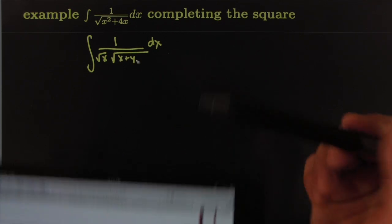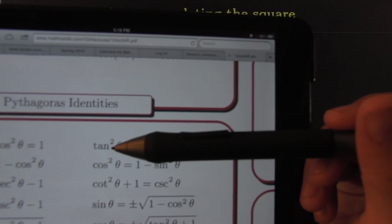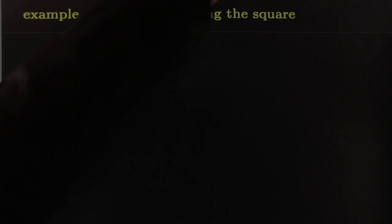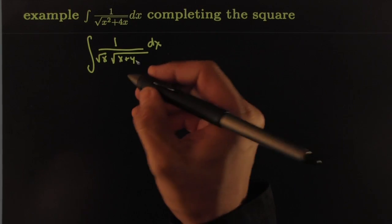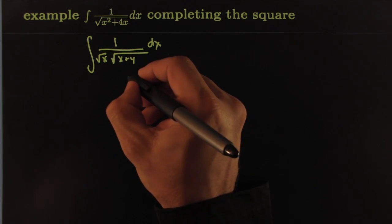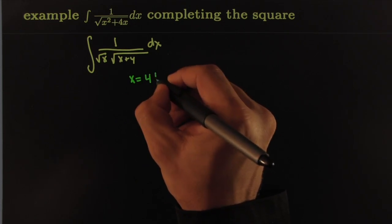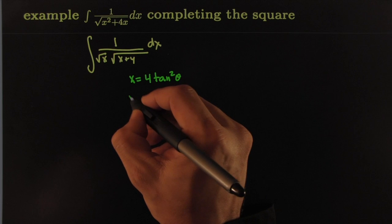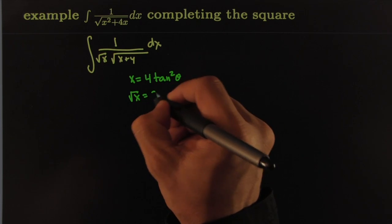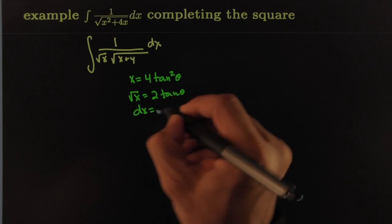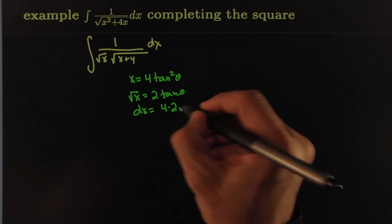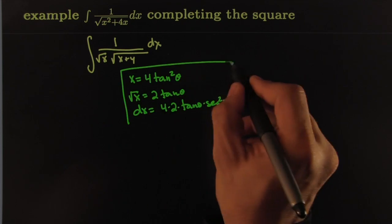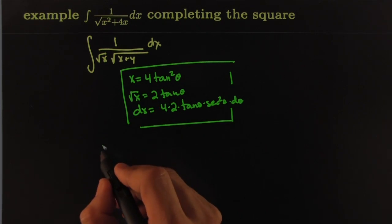Looking at the identity sheet, tangent² + 1 = secant², which is close to our form. Inspired by this, we try a bold substitution: let x = 4 tan²θ. Then √x = 2 tanθ, and the differential dx = 4 · 2 tanθ · sec²θ dθ = 8 tanθ sec²θ dθ. That completes the substitution dictionary.